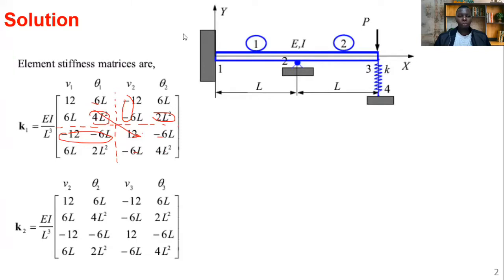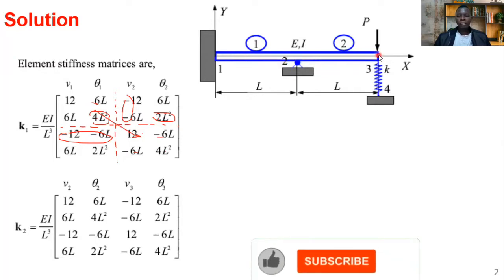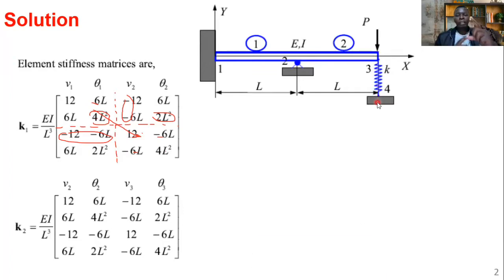The node numbers are indicated — nodes one and two. Remember there are two degrees of freedom at each node: vertical displacement v1 and rotation theta1 at node one, and similarly v2, theta2. For element two we have v3, theta3. For the spring element, since it only carries axial load with no rotation, we only have v4. The loads act in the same direction, so the assembly simplifies — you can use superposition.